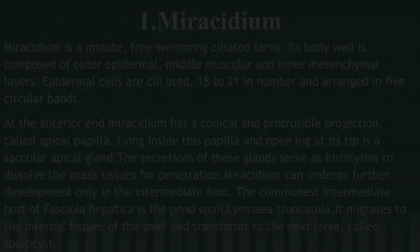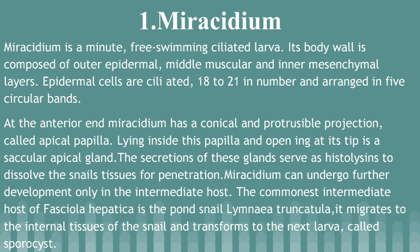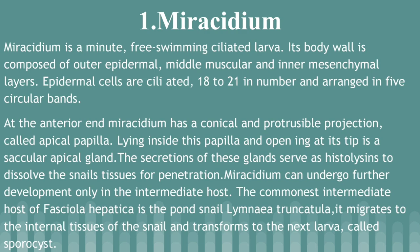Miracidium is a minute, free-swimming ciliated larva. Its body wall is composed of an outer epidermal, middle muscular, and inner mesenchymal layer. Epidermal cells are ciliated, 18 to 21 in number, and arranged in five circular bands. At the anterior end, Miracidium has a conical and protrusible projection called the apical papilla, with an apical gland lying inside. The secretion of this gland serves to dissolve the snail tissue for penetration. Miracidium can undergo further development only in the intermediate host, the pond snail, and migrates to the internal tissue of the snail to transform into the next larva called Sporocyst.